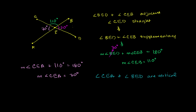And you might say: wait, they look like they're horizontal, they're next to each other. But vertical really just means that they're across from each other, across an intersection from each other. Angle CEB and angle AED are also vertical, and that might make a little more sense because one is literally on top and one is on bottom — they're kind of vertically opposite from each other.